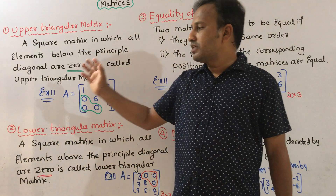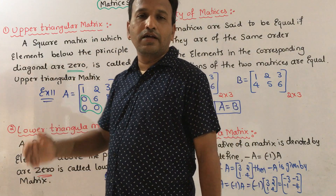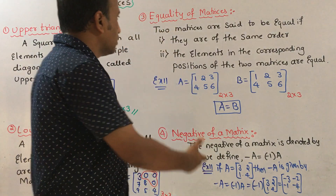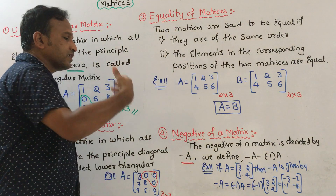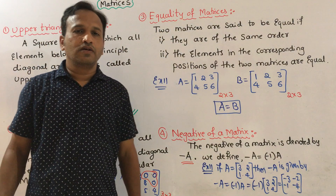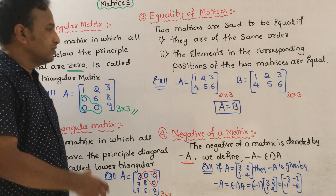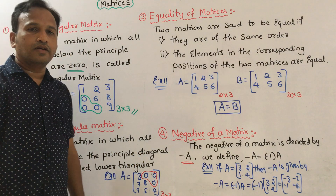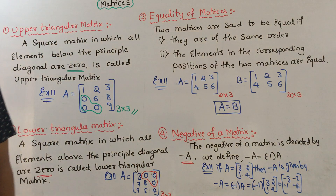To summarize: we covered upper triangular matrix, lower triangular matrix, equality of matrices, and negative of a matrix. Thank you.